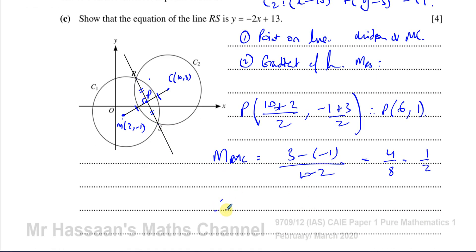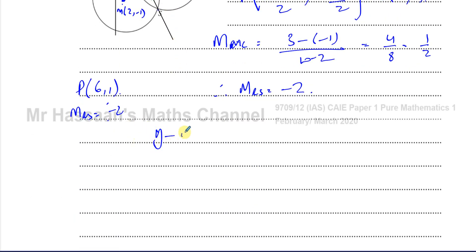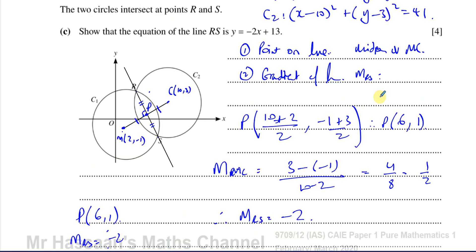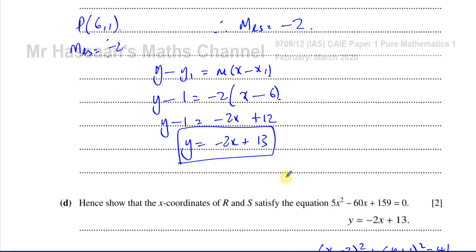The gradient of line RS is the negative reciprocal of one half, which is minus 2. Using point P at 6, 1 and gradient minus 2, we apply y minus y1 equals m times x minus x1: y minus 1 equals minus 2 times x minus 6, giving y minus 1 equals minus 2x plus 12. Adding 1 to both sides: y equals minus 2x plus 13. That's exactly what we had to show.